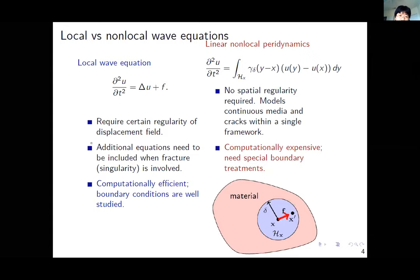On the left we have the local wave equations, which only involve derivatives and require certain regularity because they require computation of derivatives. They need additional equations to model singularities such as fracture, as mentioned in the morning session by Dr. Silling. On the other hand, the local problem is more computationally efficient and boundary conditions are relatively simple. The non-local models require less spatial regularity and can model continuous media and defects within a single framework, but are more computationally expensive and need volumetric boundary treatments.